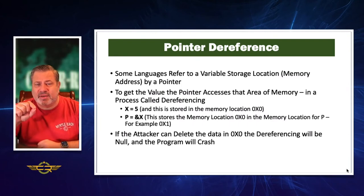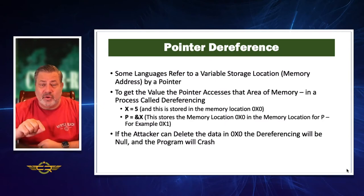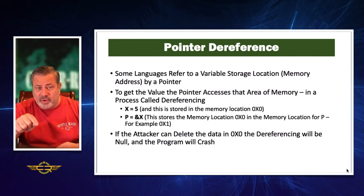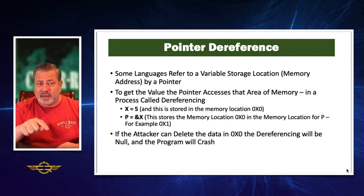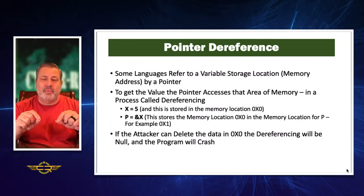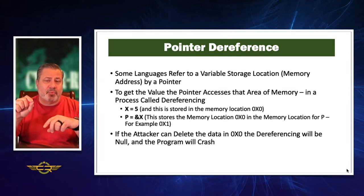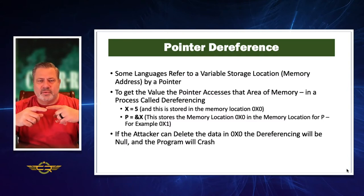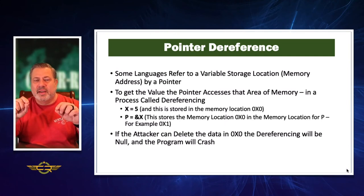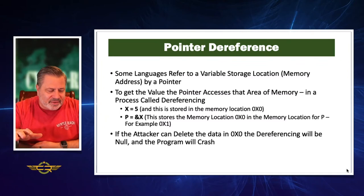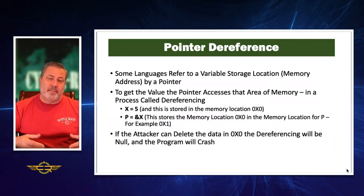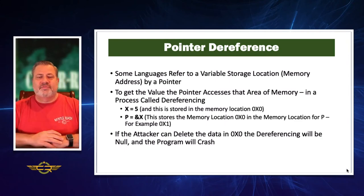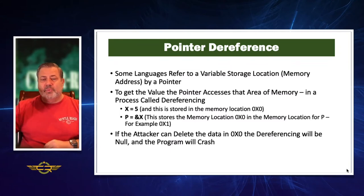Pointer dereferencing is very important, especially the null pointer dereference. Some languages refer to a variable storage location or a memory address by a pointer. To get the value, the pointer accesses that area of memory in a process called dereferencing. This is how it looks in a program: a programmer will assign a variable a specific value — in this case, x in our program is going to equal 5. In memory, x equals 5 will be stored in a memory location — arbitrarily, 0x0 is our memory storage location.